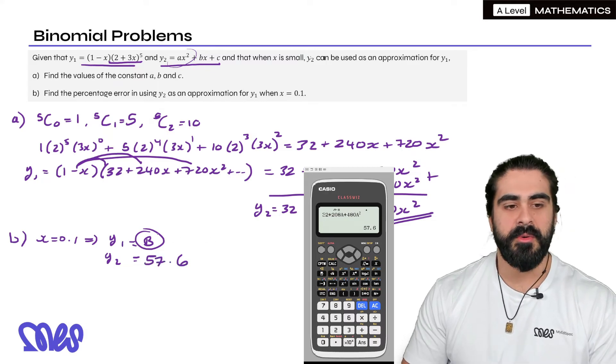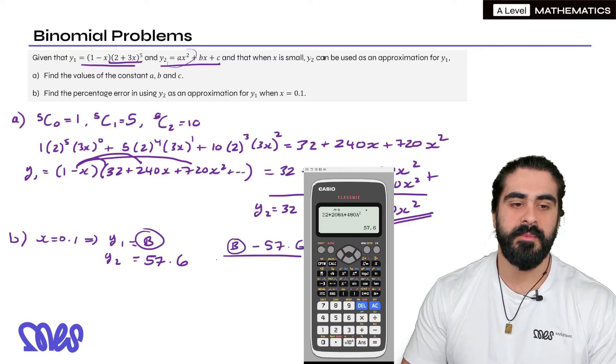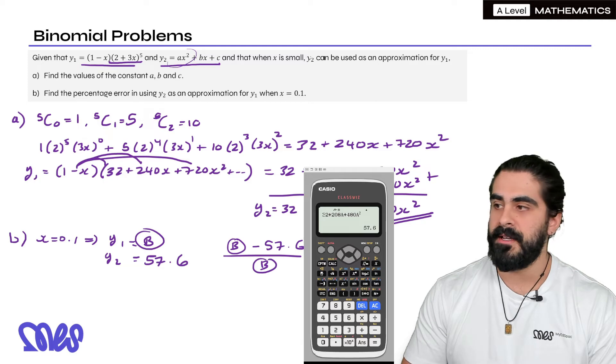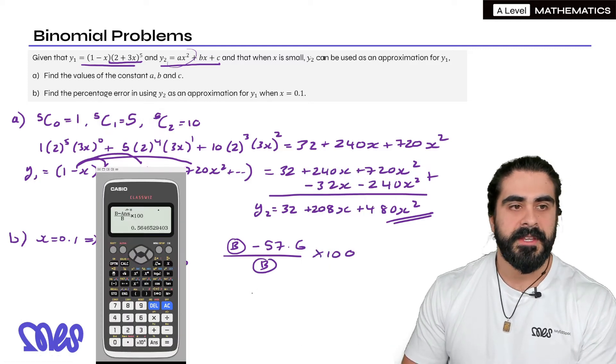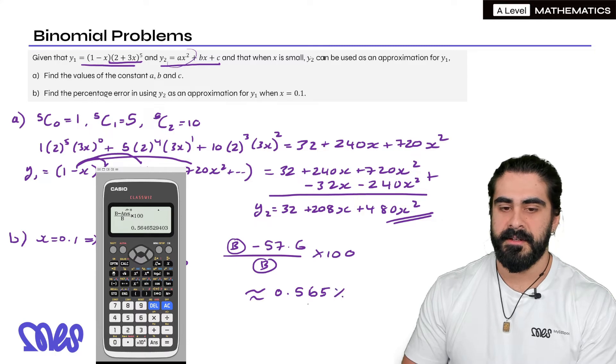So to work out the percentage error we work out the difference between the two. So I'm going to do what I stored as b minus that 57.6 and then we divide it by what the actual value is. The actual value is what we subbed in as b and then we times it by 100. So our percentage error here is approximately, when they don't say, just do three significant figures. So 5.65 percent.